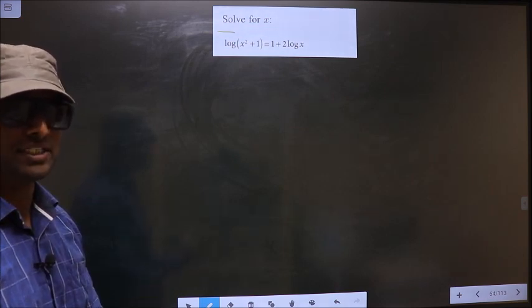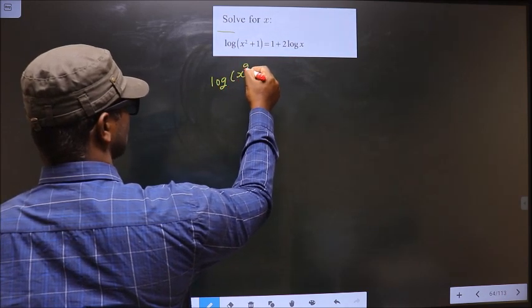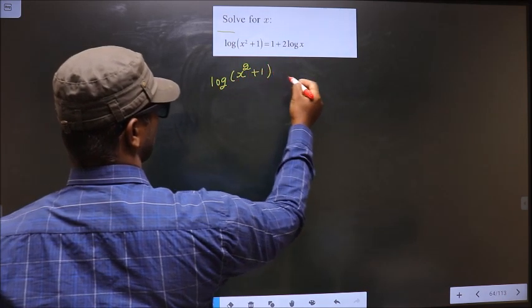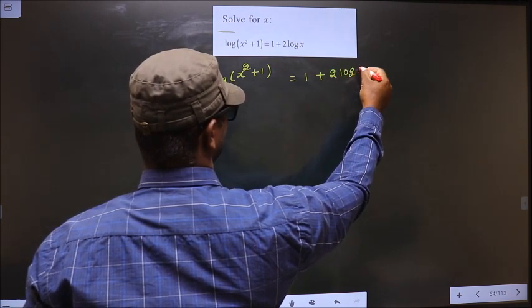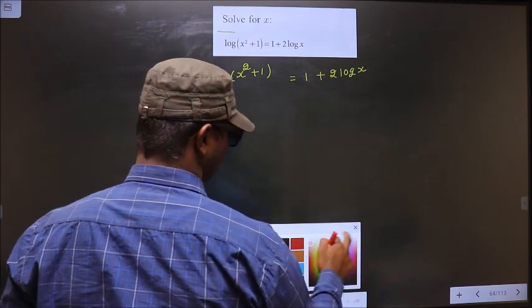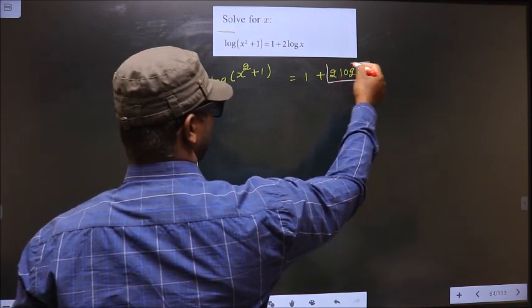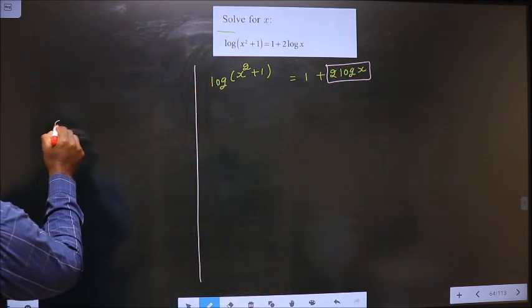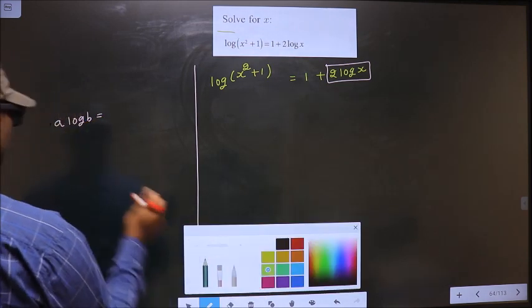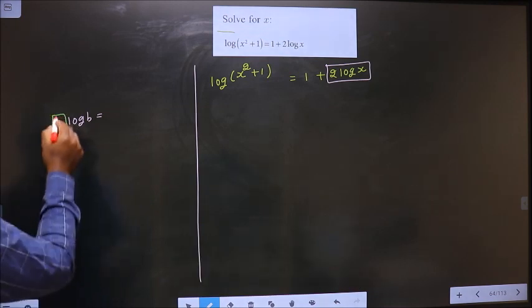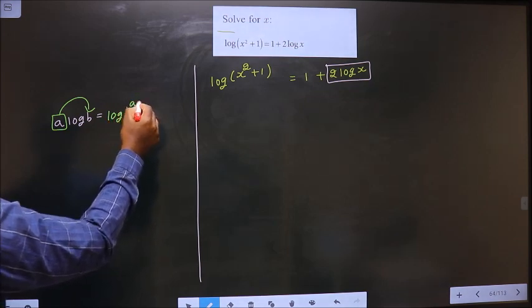The given equation is log(x² + 1) = 1 + 2log(x). I will apply the formula a·log(b) = log(b^a). Whenever you have a number before the log, it will go as the power, making it log(b^a).